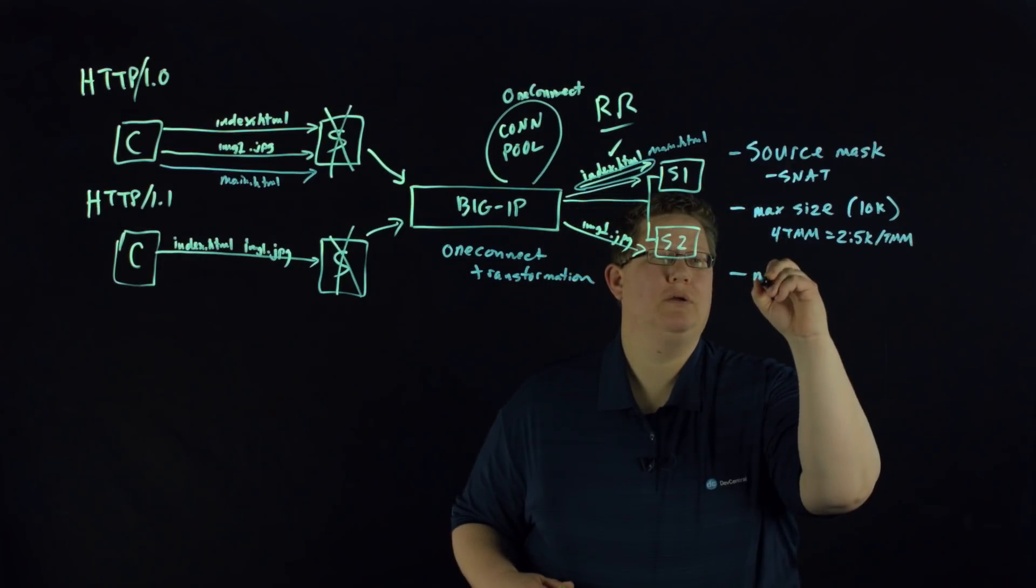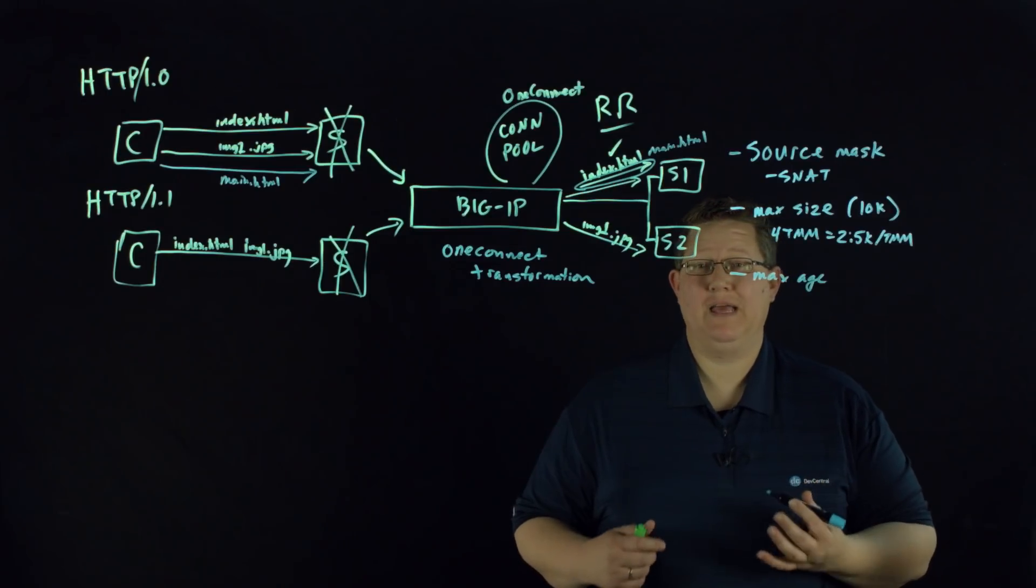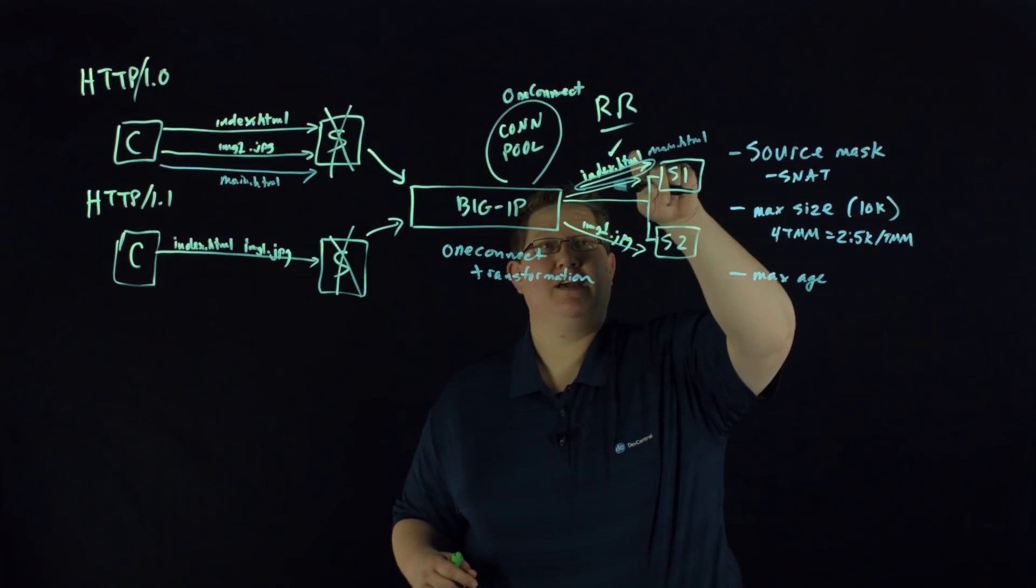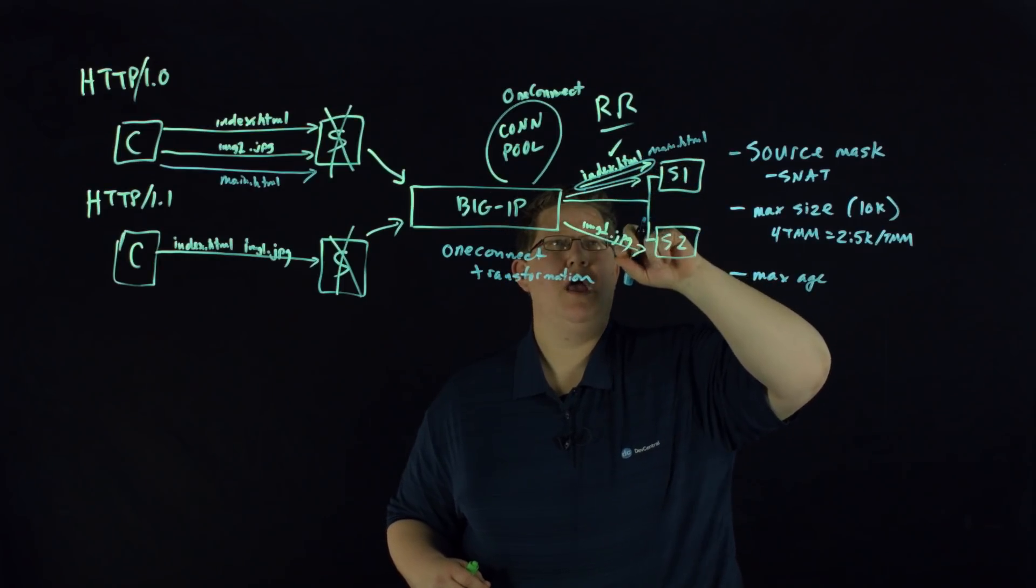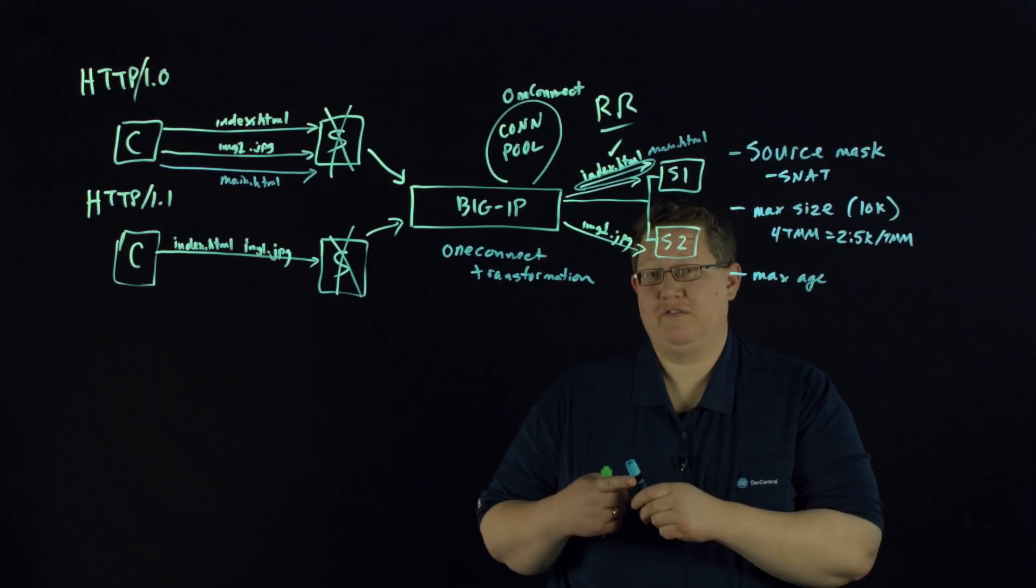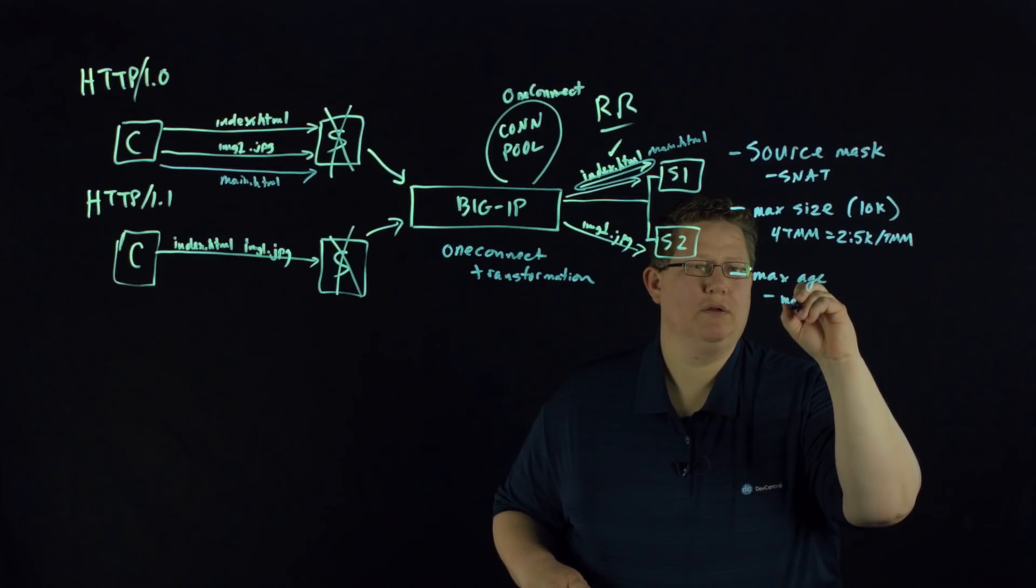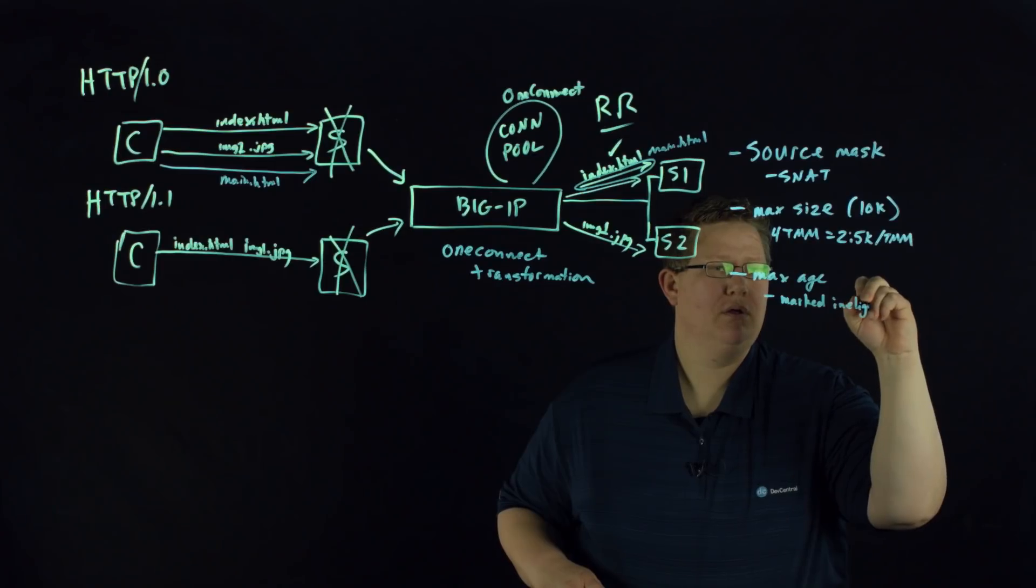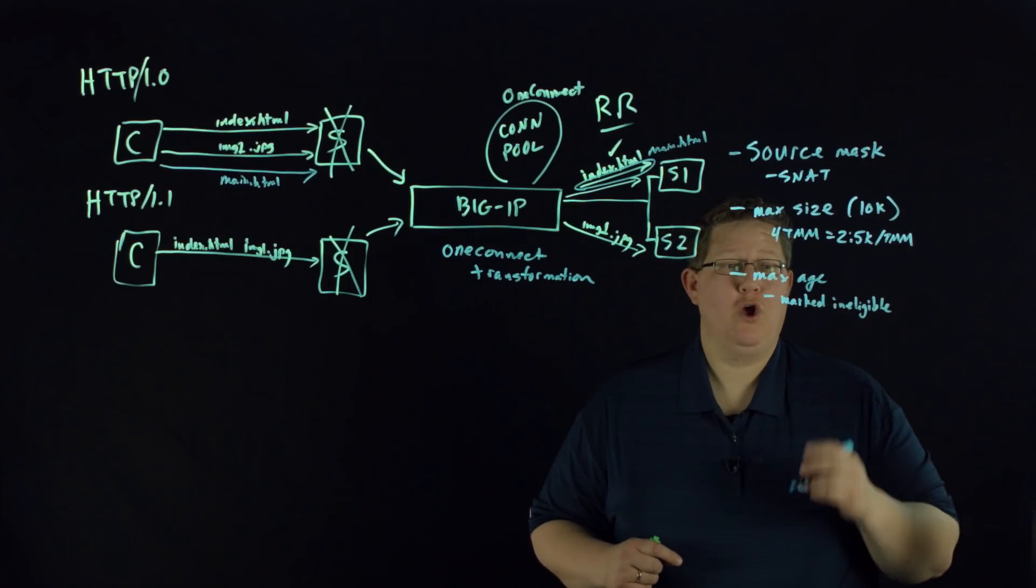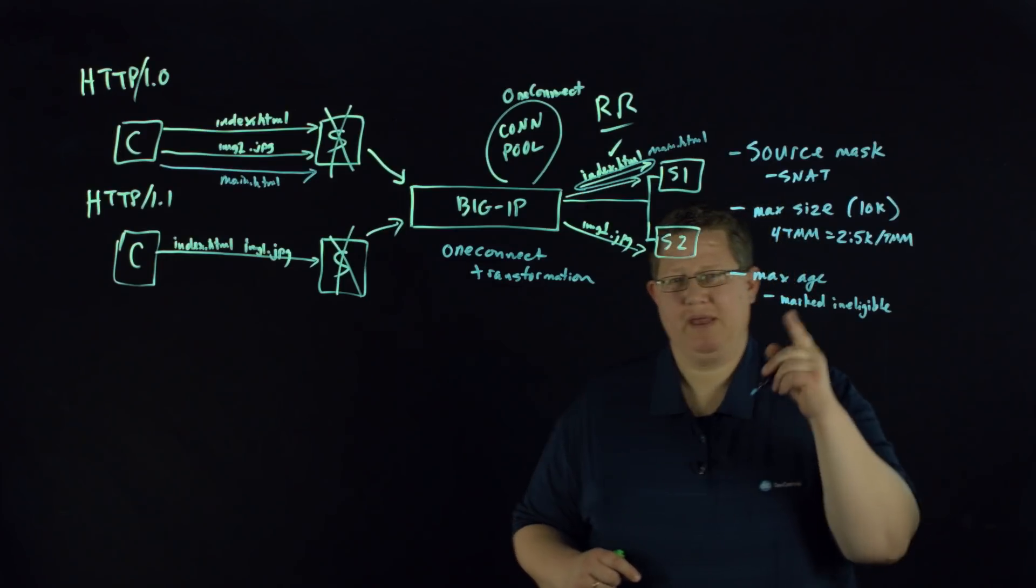Max age - that's the max number of seconds a connection can remain in the reuse pool before it's marked ineligible. Two points on being marked ineligible. It's triggered after the first use or first reuse of the connection. In this case, on index.html, that max age doesn't start, that timer doesn't start. But once it's been reused with this main.html, now that max age timer is in there. That's triggered after the first reuse, not the initial use. And also, max age, it is marked ineligible. It is not closed. When the next request comes in, it will close that and open a new one. Or if the server side HTTP timer expires, then the server will close that connection.